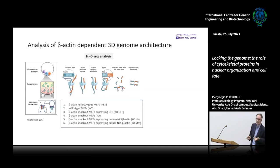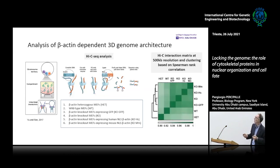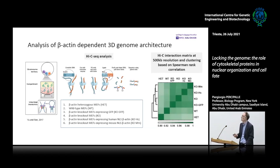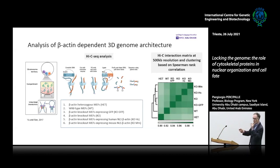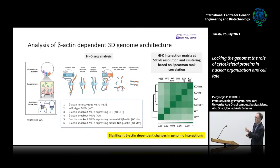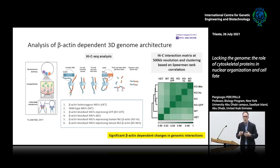Using the Hi-C data, we constructed an interaction matrix at 500 kb resolution and performed clustering based on Spearman rank correlation. Based on actin levels, the different cell types correlate: heterozygous and wild-type correlate together; knockout cells correlate; and cells constitutively expressing nuclear actin also correlate. The take-home message is that there are significant beta-actin-dependent changes in genomic interactions — the architecture of the genome is dependent on beta-actin.